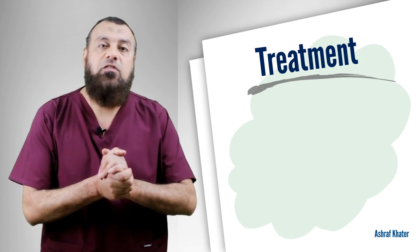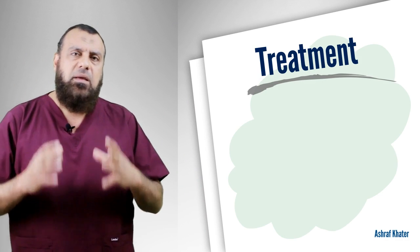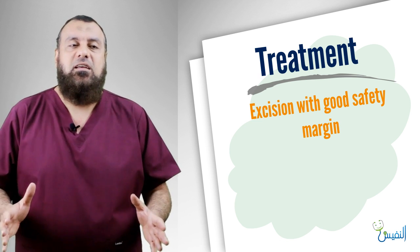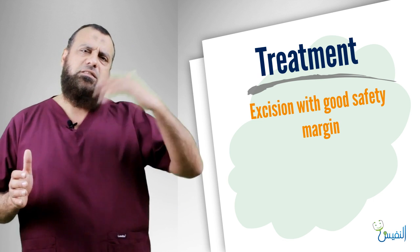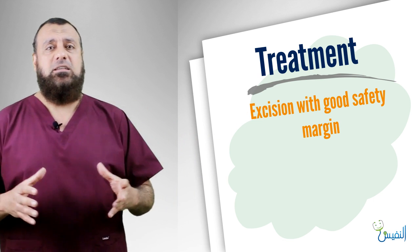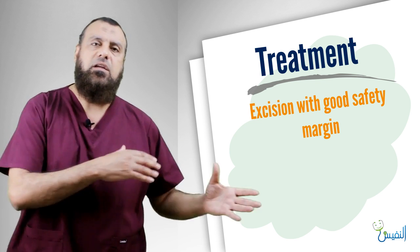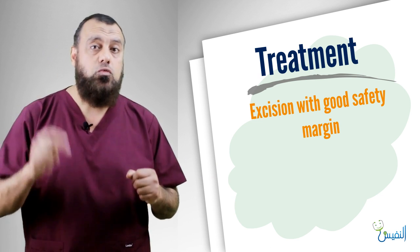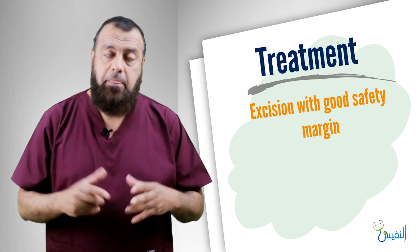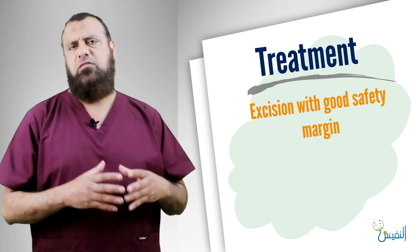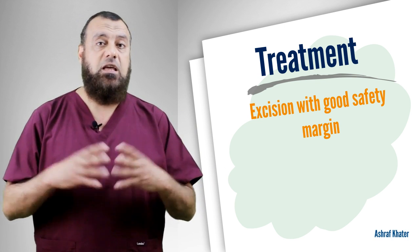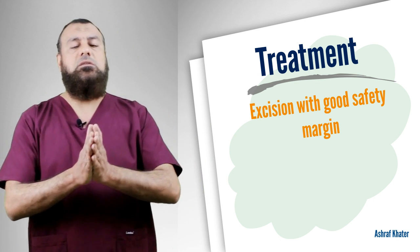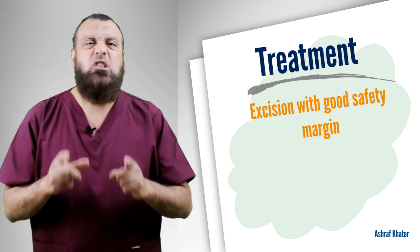What about the treatment of squamous cell carcinoma? The main target of treatment of the primary tumor is excision with a good safety margin. In the face, the safety margin is about 0.5 cm (5 mm). In other areas like the trunk, it is 1 cm all around, and this should be assured by frozen section. Other lines of treatment — if the tumor is irresectable or locally advanced — include chemoradiotherapy or cryotherapy. But the main treatment of the primary squamous cell carcinoma is wide local excision by surgery.